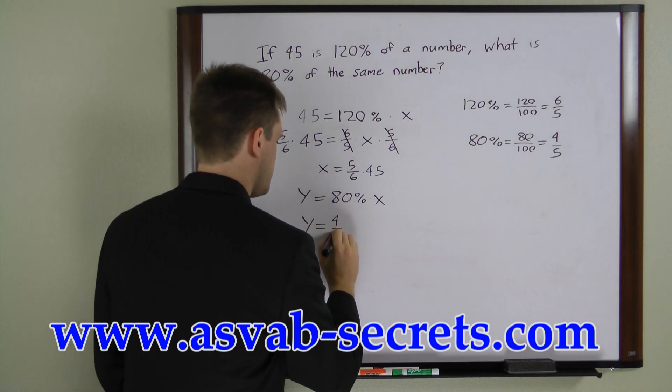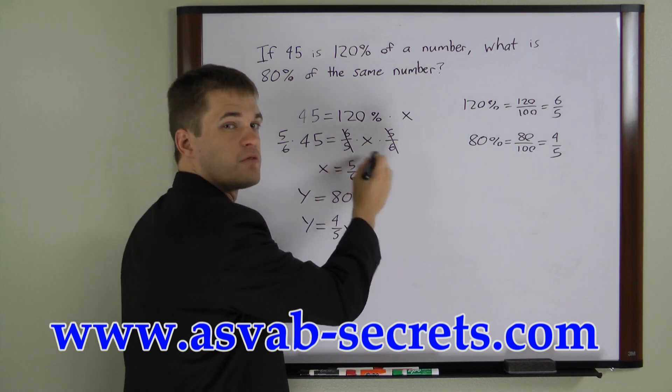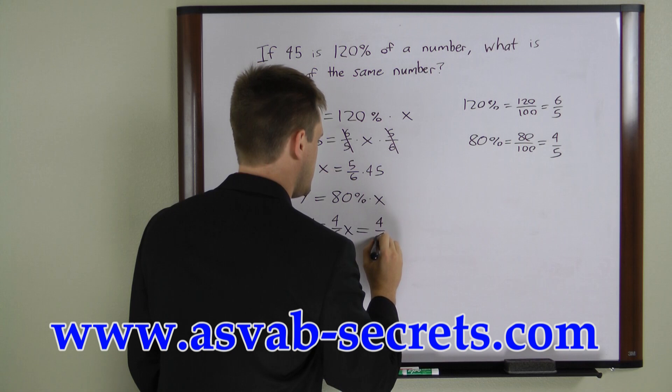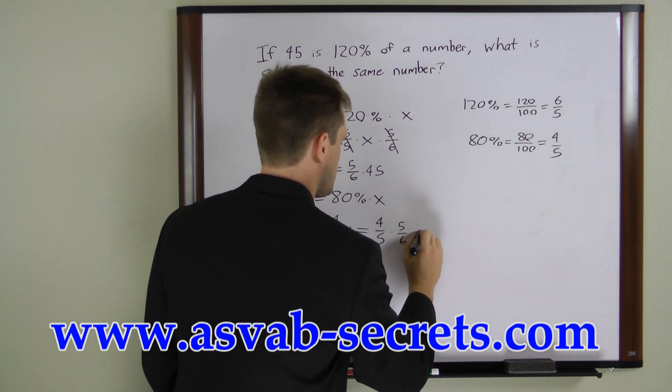y equals 4 fifths times x. If we substitute this value in for x, we get y equals 4 fifths times 5 sixths times 45.